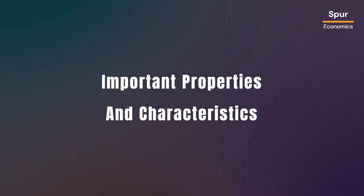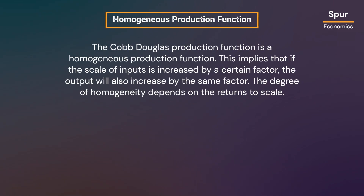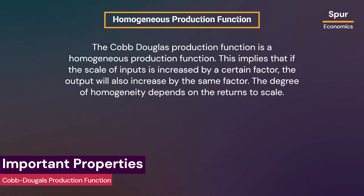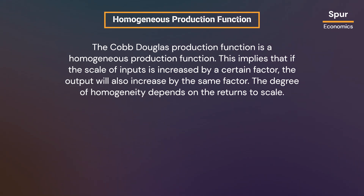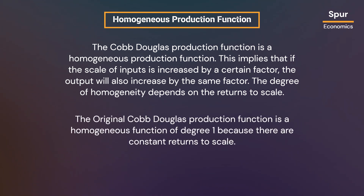Now let us discuss the important properties of the Cobb-Douglas production function. Firstly, the Cobb-Douglas production function is a homogeneous production function. This implies that if the scale of inputs is increased by a certain factor, the output will also increase by the same factor. The degree of homogeneity depends on the returns to scale. The original Cobb-Douglas production function is a homogeneous function of degree one because there are constant returns to scale.